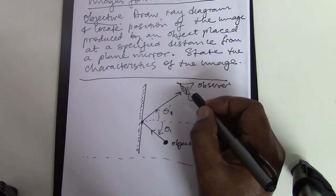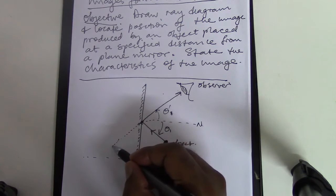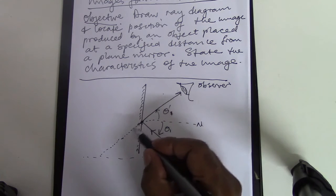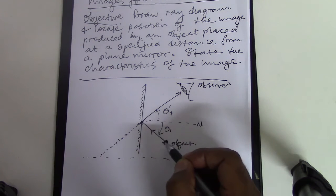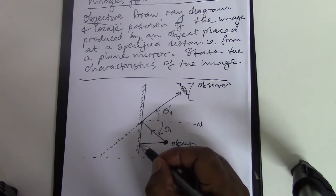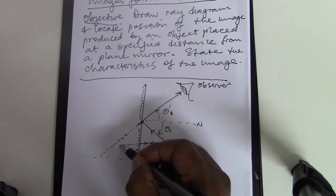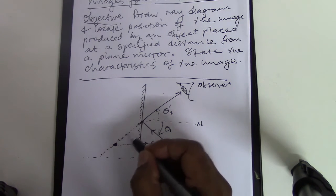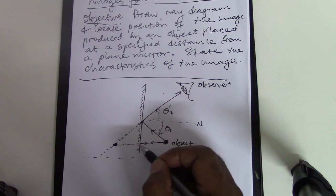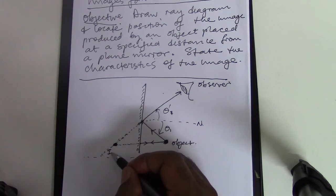According to the observer, he doesn't see the light coming from the object directly, but he sees it coming from somewhere behind the mirror in a straight line. If a ray goes and strikes the mirror perpendicularly, it is reflected backwards along the same path. But if we project backwards, where the two projected rays meet behind the mirror — that is where we have our image being formed.